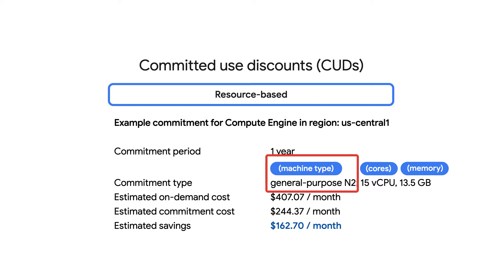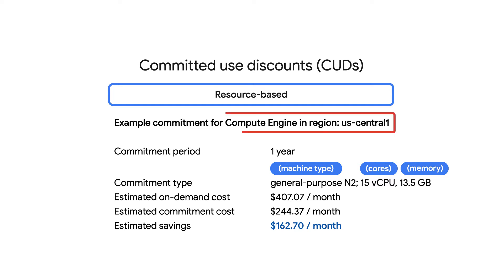You can make separate commitments for GPUs and local SSDs as well. Discounts apply to the aggregate number of vCPUs, memory, GPUs, and local SSDs within a region, so they are not affected by changes to your instance's machine setup. Like some spend-based CUDs, resource-based CUDs are purchased on a per-region basis.